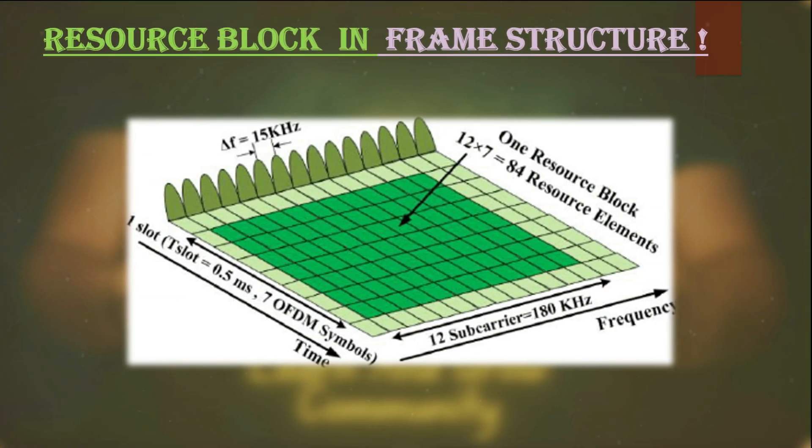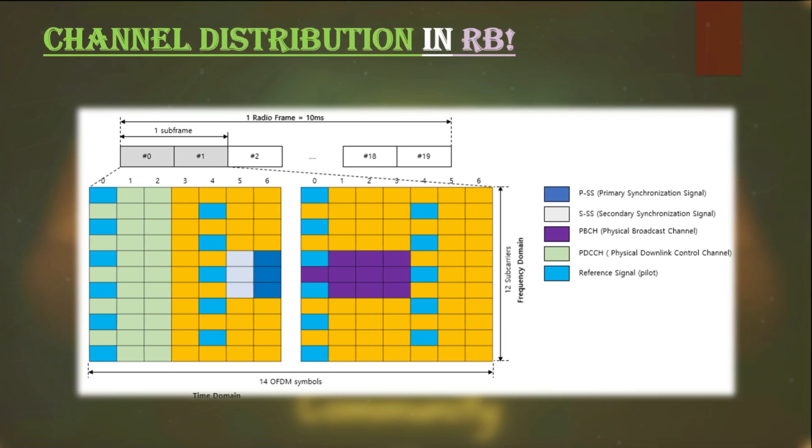To have better understanding of physical layer mapping, there is a must to understand the concept of basic building blocks of the resource blocks, which I would be covering separately, so you can stay tuned for the updates by subscribing to us and do not forget to press the bell icon too. But in short, each resource block is built from one slot in the subframe—means in the time domain—and 12 subcarriers in the frequency domain.